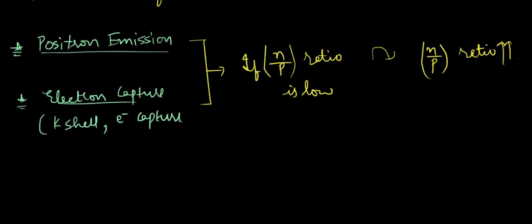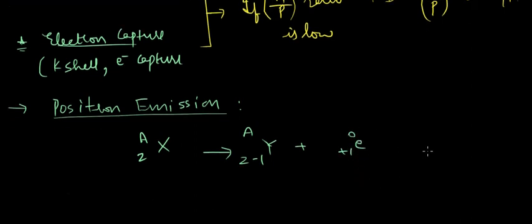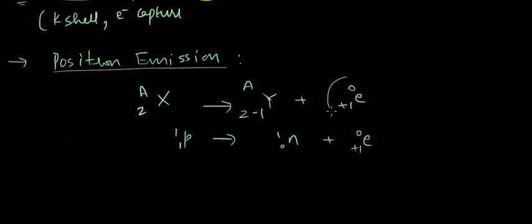In positron emission, Z(X)A gets converted into Z-1(Y)A plus a positron (plus one, e, zero). A proton converts into a neutron zero plus a positron. A positron is the anti-entity of an electron — beta particle is minus-one-e-zero, and a positron is plus-one-e-zero.